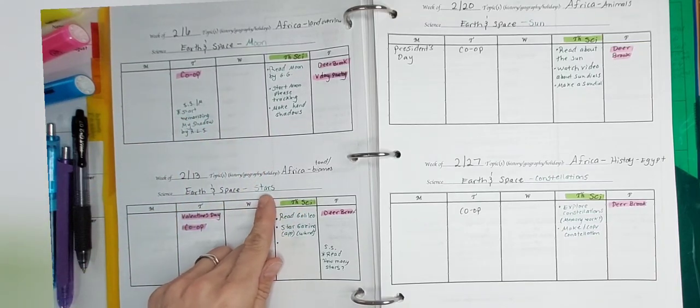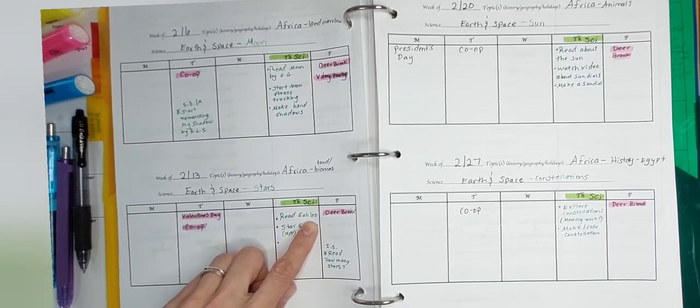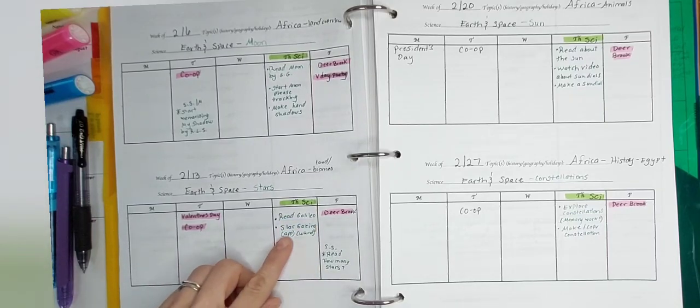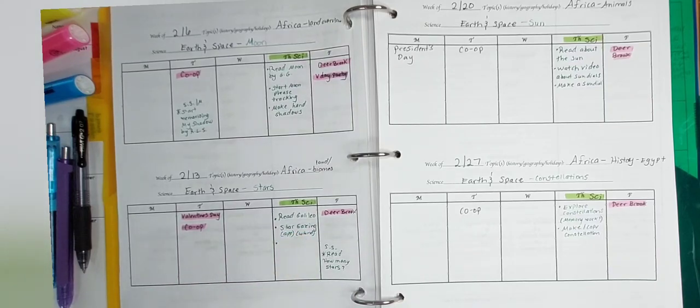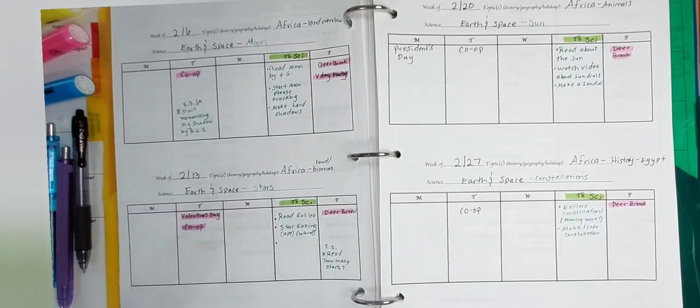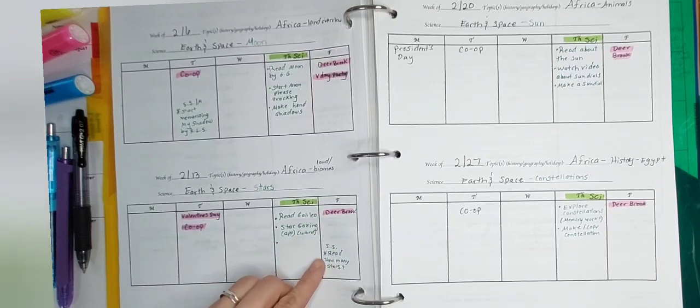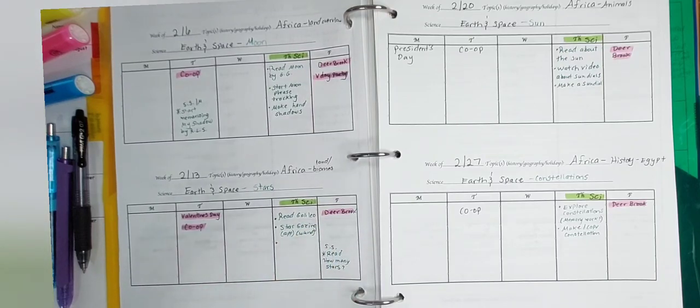Then week two of earth and space for stars, we'll read about Galileo and make a history to science connection with that famous scientist from long ago. And we will do some stargazing either with a real telescope or with the app. And he might do that on the weekend with his dad. Sometimes they go up on the roof with the ladder. It's really fun and look at the stars on the roof.